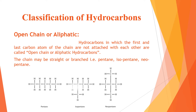In the given image we can see: the first structure is pentane, which has no branches; the second is isopentane, which has one branch; and the third is neopentane, which has two branches.